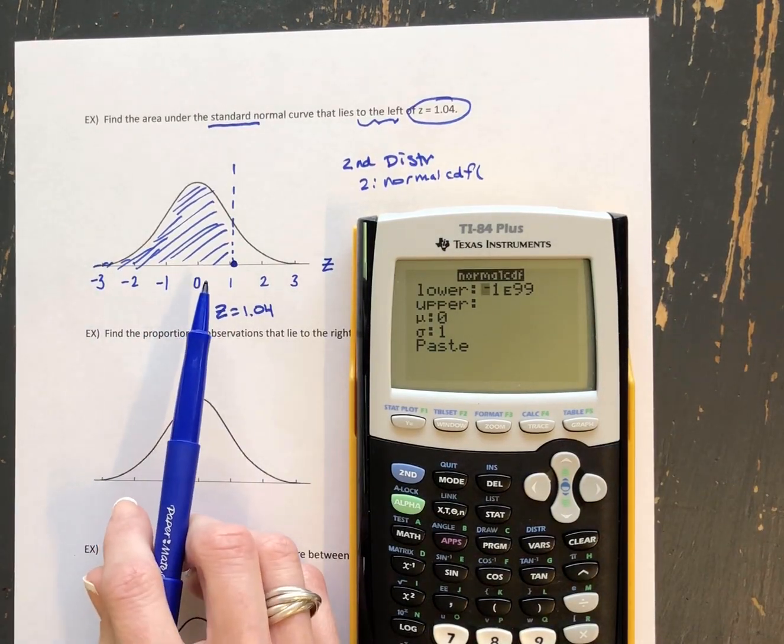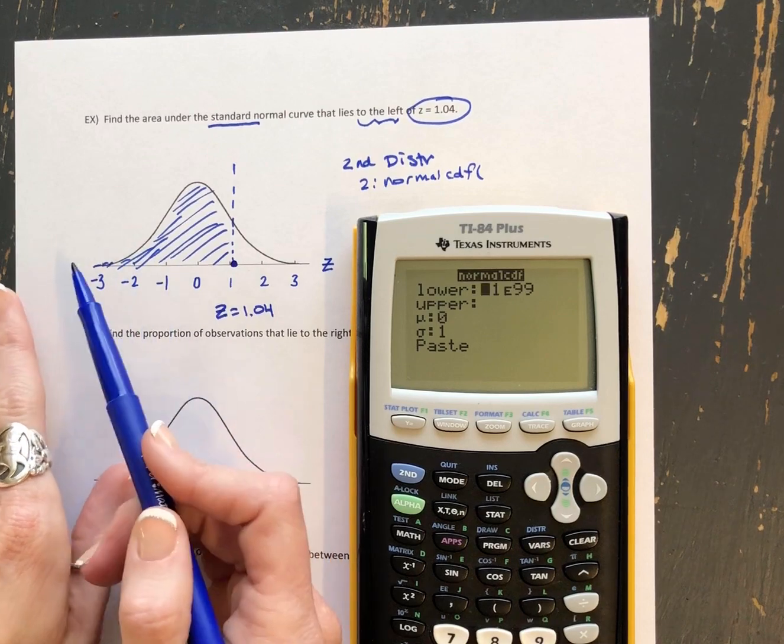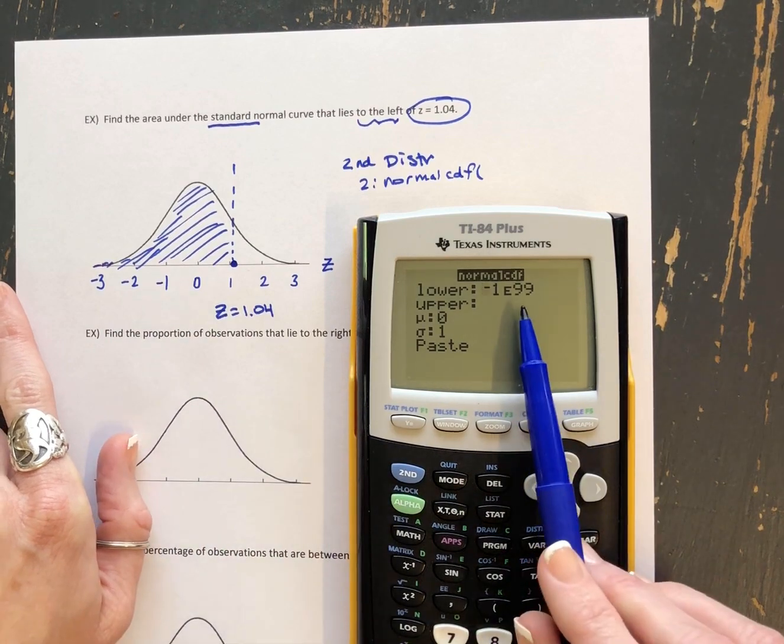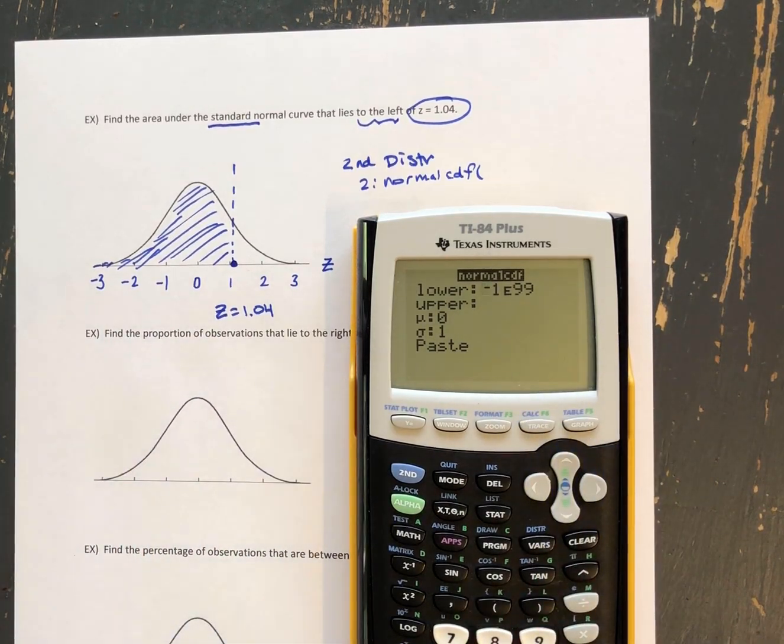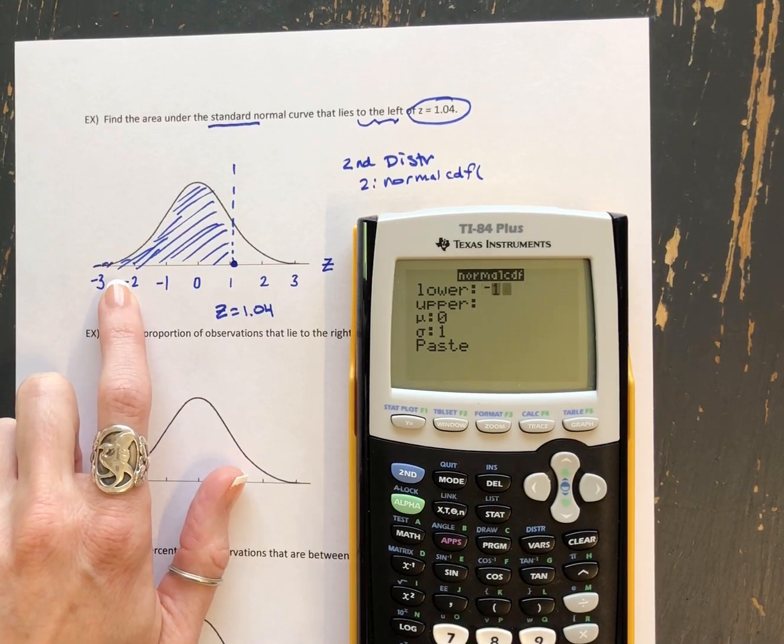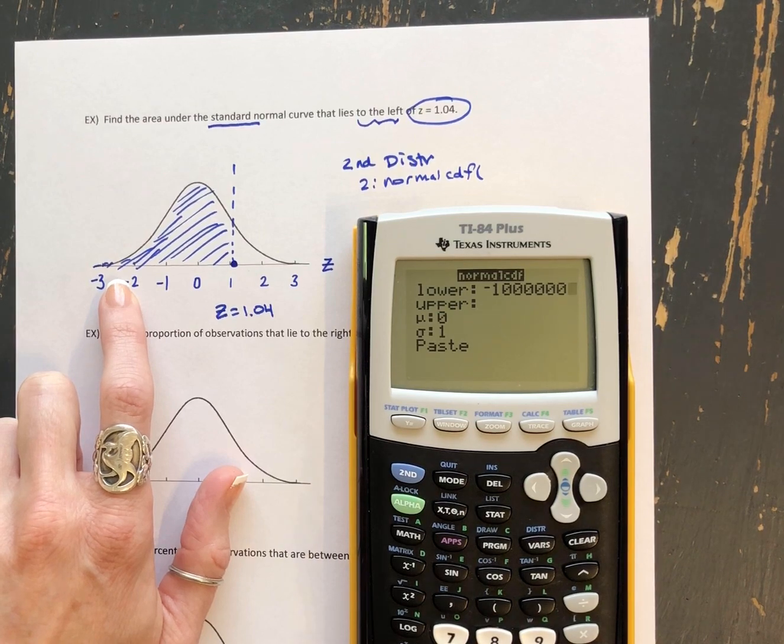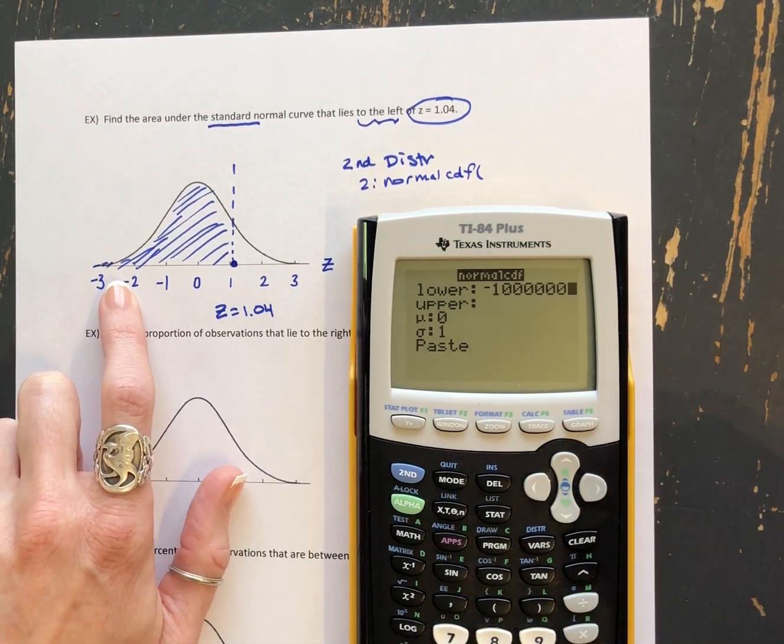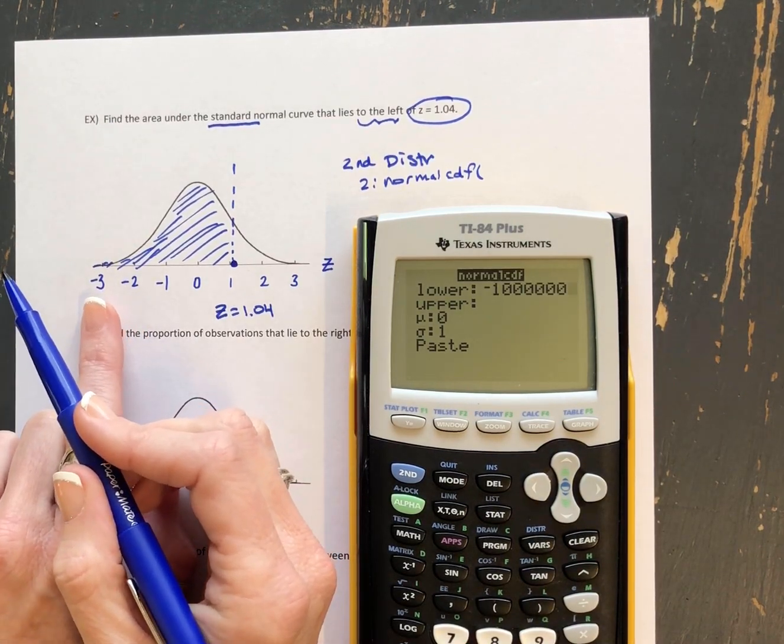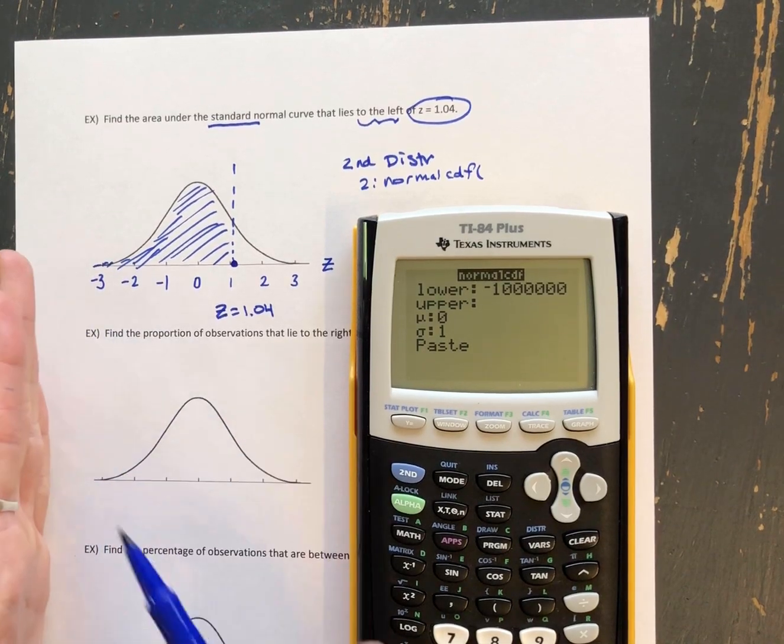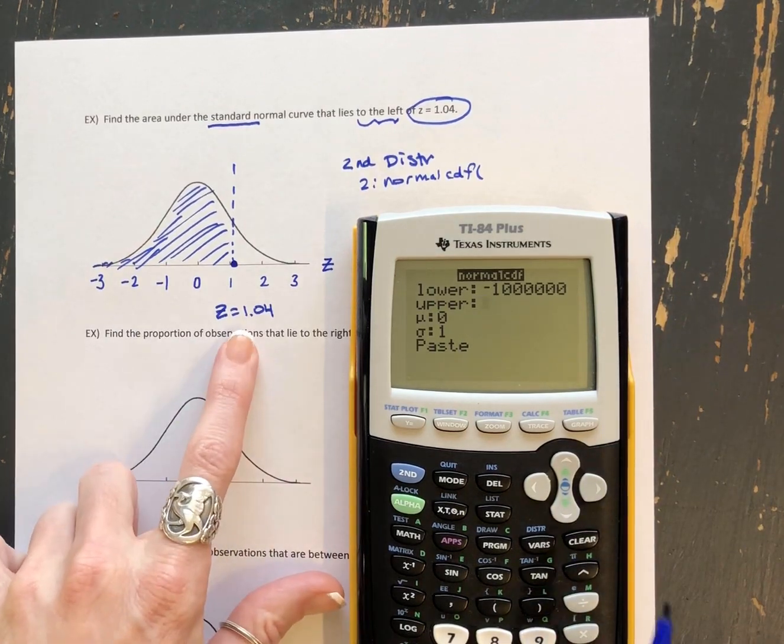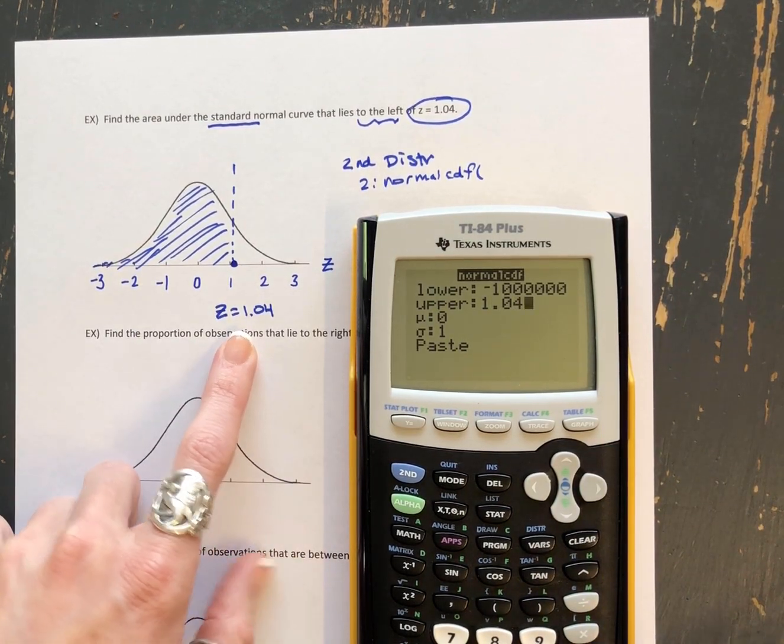In this case, we're going on to negative infinity, right? We wanted all the area to the left of 1.04. And so the way we show that in the calculator is just some extremely large in magnitude but negative number. So I usually just type in like negative a million. Or you could type in negative with just a big long series of nines. That would be fine too. We're just trying to show that we're going infinitely negative as our lower value. All the way up to when do I want to stop finding area? Well, I want to stop finding area once z gets to 1.04. So that's going to be our upper.